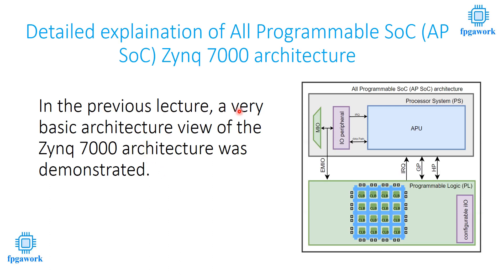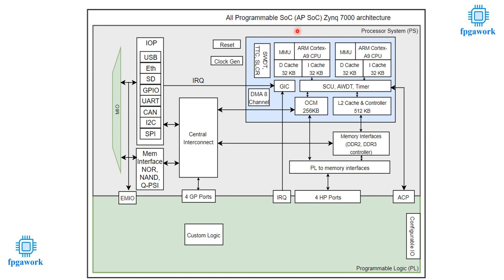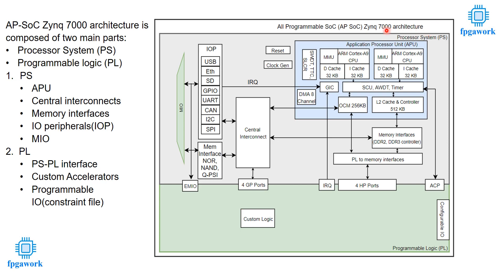In the previous lecture, a basic architectural view of the Zynq 7000 architecture was explained. In this lecture, I will give a more detailed version of the Zynq 7000. Zynq 7000 architecture basically has two components: one is PS and the other is PL. In any hybrid system, the software part is implemented in the PS and the hardware part is implemented in PL. PS and PL communicate via different interfaces, which I will explain shortly.